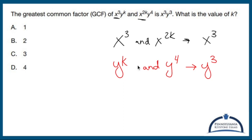It's got to be, because if the greatest common factor between y^k and y⁴ is y³, that means k is three.